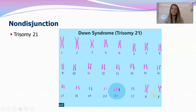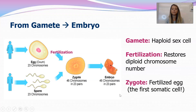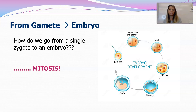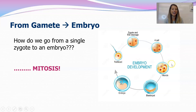A karyotype showing a male with trisomy 21 would reflect this. It's important to understand how we get from a gamete to an embryo. A gamete is a haploid sex cell — an egg or sperm. Fertilization is when the chromosome number is restored to 46, and that fertilized egg is called a zygote — the first somatic cell, the first diploid body cell. To go from a zygote to an embryo, we need mitosis. The zygote goes through mitosis to make more cells, so whatever is in the zygote is going to be in every cell of the embryo.